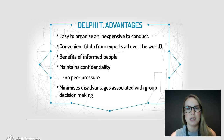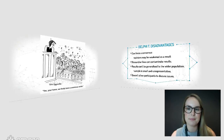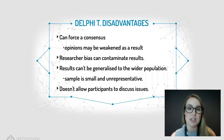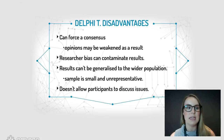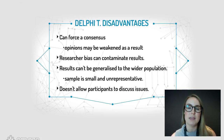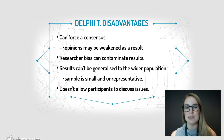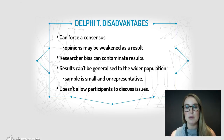Having disagreements in person can get quite heated. Some disadvantages: the Delphi technique can force a consensus, meaning where some people disagree they have to compromise, so opinions can get weakened or washed out in the results. Researcher bias can contaminate the results throughout the whole study — in generating themes and interpreting responses. The results can't be generalised to the wider population as the sample is really small and not representative because you have only experts in a field. The Delphi technique also doesn't allow participants to openly discuss issues — they can't bounce off or respond to each other.